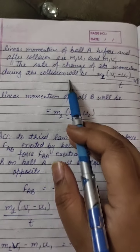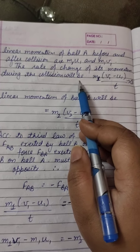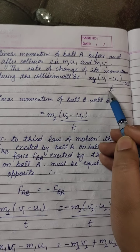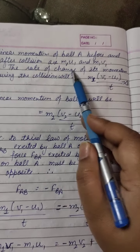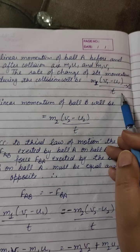And here U1 is greater than U2. So as we know, the rate of change of momentum during the collision will be M1 times V1 minus U1 upon T, where V1 is final and U1 is initial velocity. Because we are talking about rate of change, the momentum will change with time.